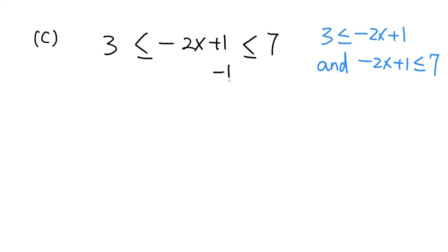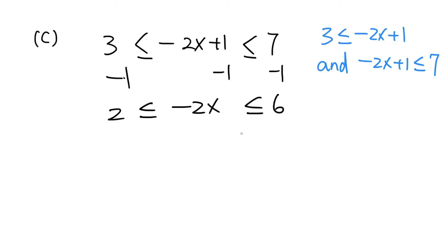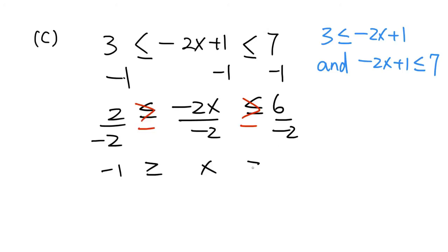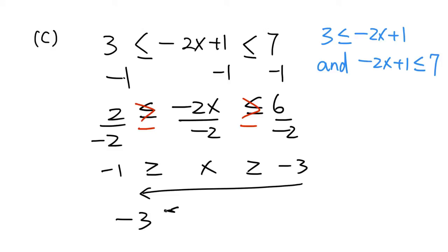We can solve these two inequalities at the same time. We subtract 1 from everything, and we have 2 less than or equal to negative 2x, less than or equal to 6. Then we divide everything by negative 2. Because negative 2 is a negative number, we have to change the direction of the inequalities, and we get negative 1 and negative 3. Reading this backward, we rewrite it as negative 3 less than or equal to x less than or equal to negative 1.